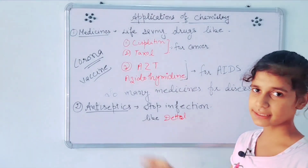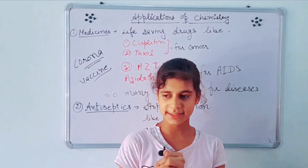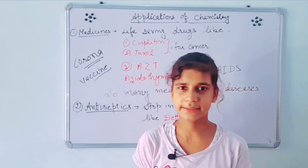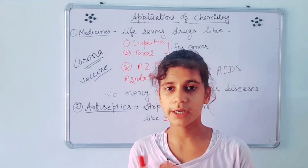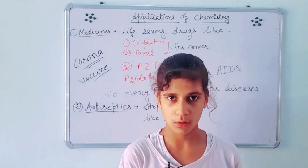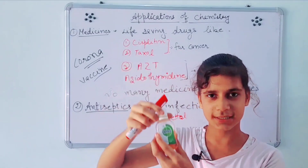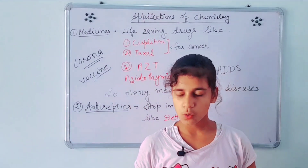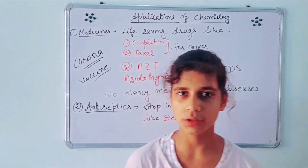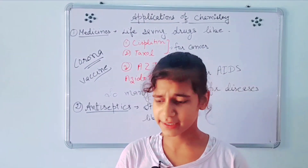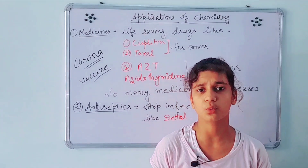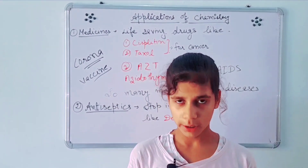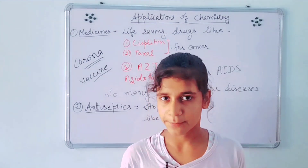Next is antiseptics. An antiseptic is a medicine which helps us to stop infection. If we are wounded, we put Dettol on the wounded area using cotton. We put Dettol to stop infection because in that wounded area there can be bacteria and microbes, and to remove them we put Dettol.